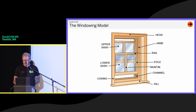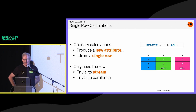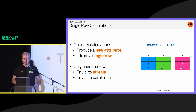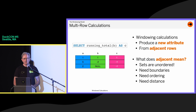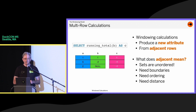What is windowing? In the old days of SQL, we had single-row calculations — you do it one row at a time, you can produce a new attribute from a single row, you can stream it, you can parallelize it very easily. But 25 years ago, people decided they wanted to do multi-row calculations — produce a new attribute from adjacent rows. The problem is SQL doesn't have a real definition of adjacent concepts, because sets are unordered.